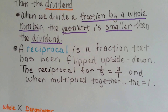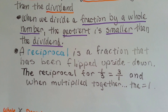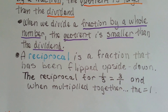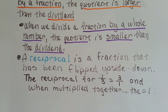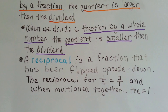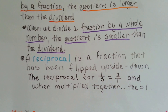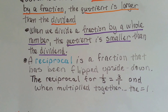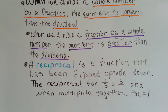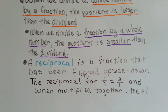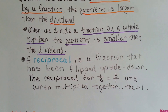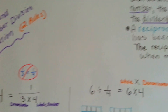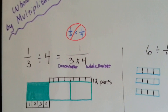I also want you to remember that a reciprocal is a fraction that has been flipped upside down. The reciprocal for 1 third is 3 over 1. And when they're multiplied together, they equal 1. You'd have 3 over 3, which would equal 1. It's pronounced reciprocal — it's a fraction that we turn upside down. Not one that's been turned upside down on its own, but that we turn upside down.